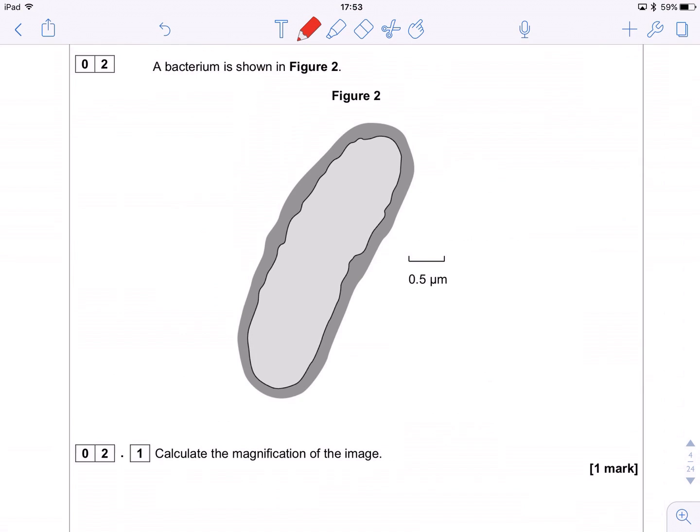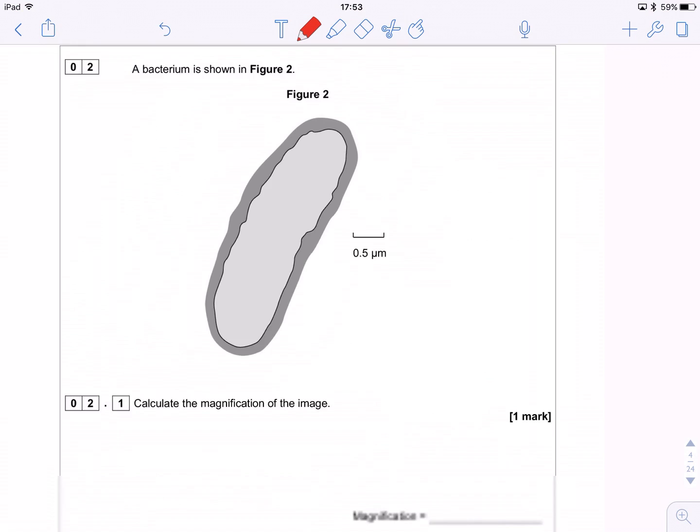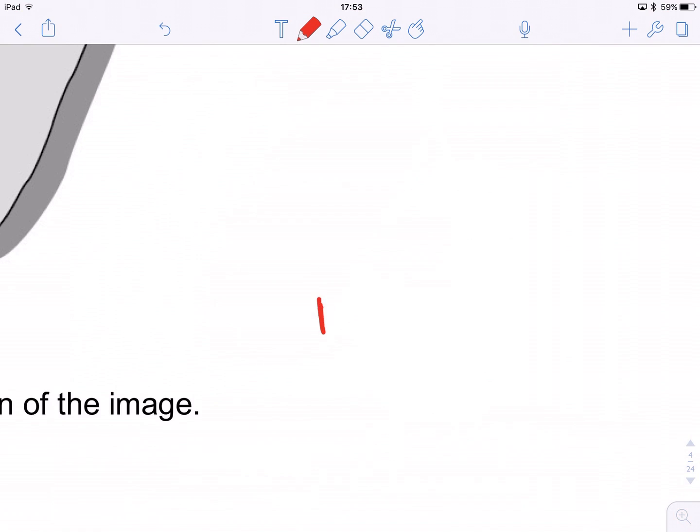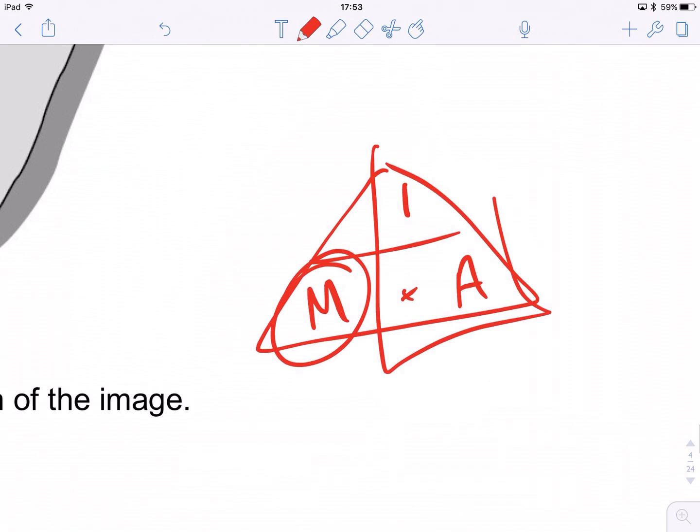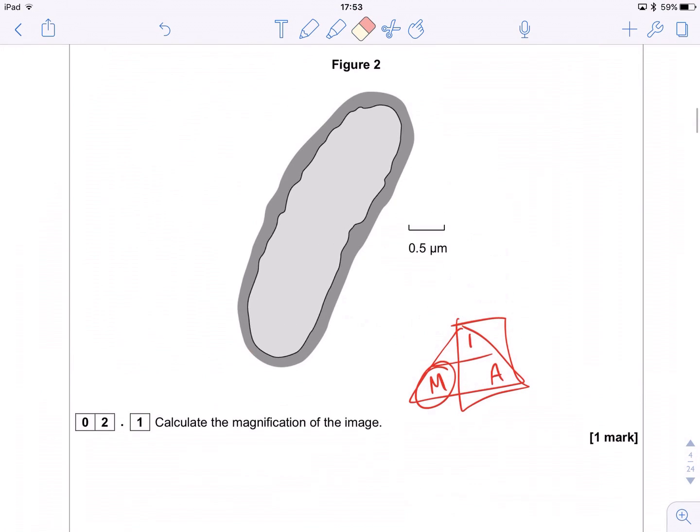So we've got to calculate the magnification of the image. We want to be using M equals I over A, so magnification equals image size over actual size. We use this equation triangle. So we want to do image size divided by actual size. Now the first thing people want to do for some bizarre reason when they see this question is measure this somehow.